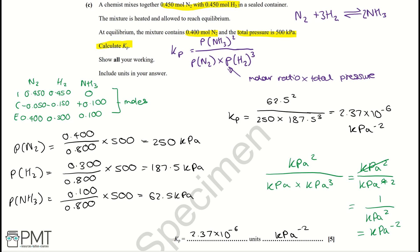To get the marks for this question: a mark for working out the equilibrium moles of H₂ and NH₃; a mark for correctly working out all partial pressures; a mark for plugging partial pressures into a correct Kp expression; a mark for the answer 2.37 × 10⁻⁶; and a mark for the correct units of kPa⁻².